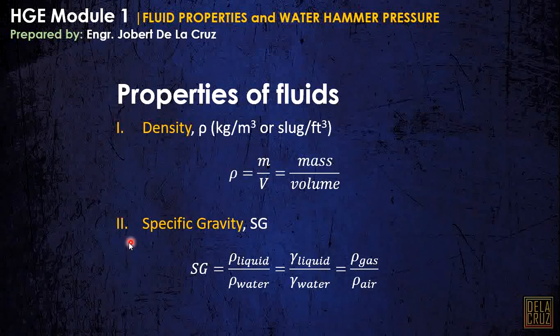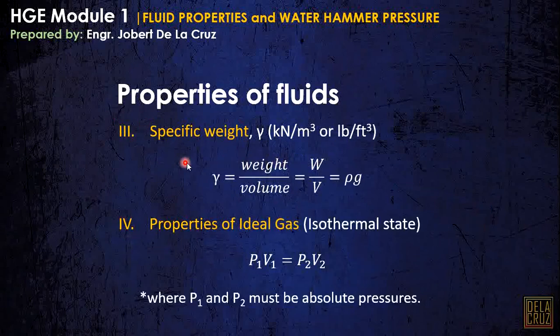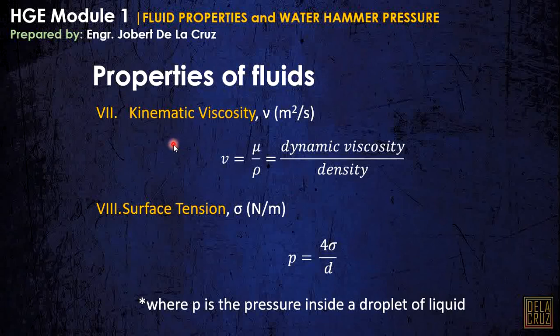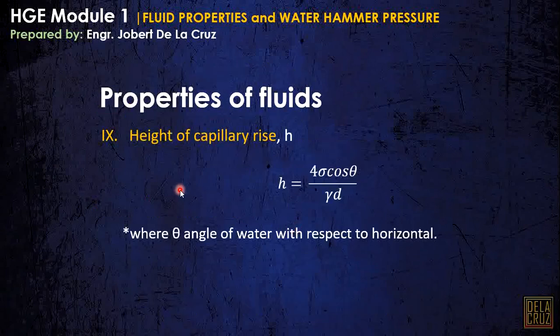The density, the specific gravity, the specific weight, these are properties of the ideal gas. Ito yung pinakagamit na gamit natin. The bulk modulus of compressibility, the coefficient of compressibility, the kinematic viscosity, the surface tension, the height of the capillary rise.